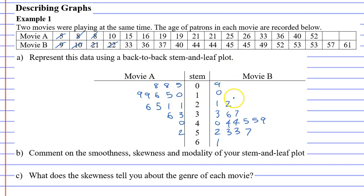Both of them have been filled in. Question B wants us to comment on the smoothness, the skewness, and the modality of your stem-and-leaf plot. We'll start with smoothness. If I draw a curve that follows the pattern of the numbers, it looks pretty smooth to me, and that would apply to both movies. So we would say both distributions are smooth.